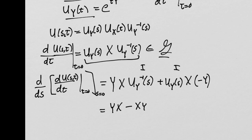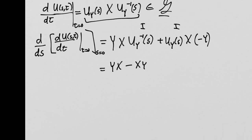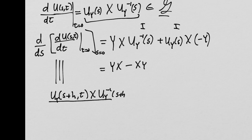That's really interesting — we now have the commutator [Y, X] = YX - XY appearing. We've shown that the derivative of U(S,T) with respect to S (at T=0 and S=0) is definitely an element of our vector space. But we don't yet know that the derivative of elements of the vector space are in the vector space. So we still don't know if [Y, X] itself is in the vector space.